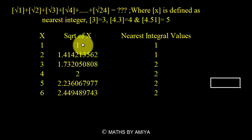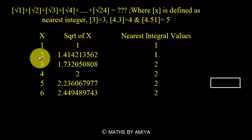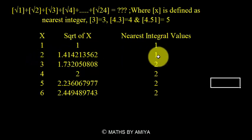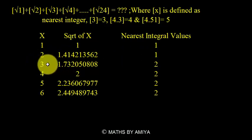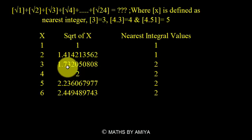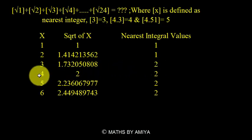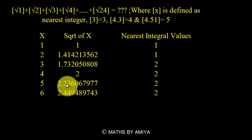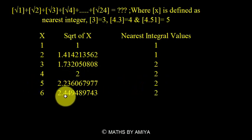In the chart: for 1, square root of 1 is 1, nearest integer is 1. For 2, square root is 1.41, and for 3 it is 1.73 — nearest is 2 because 1.7 is more than 1.5. For 4, it is 2, integral is 2. For 5, it is 2.23, integral is 2. For 6, it is 2.4, integral is 2.